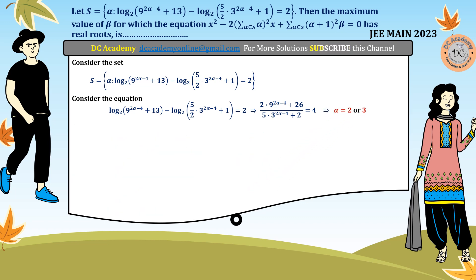After obtaining the alpha values, we find the summations over the set S. The set S contains only two elements: 2 and 3. Therefore summation of alpha equals 2 plus 3, which is 5. Summation of (alpha plus 1) whole squared equals (2 plus 1) squared plus (3 plus 1) squared, which equals 9 plus 16 = 25.